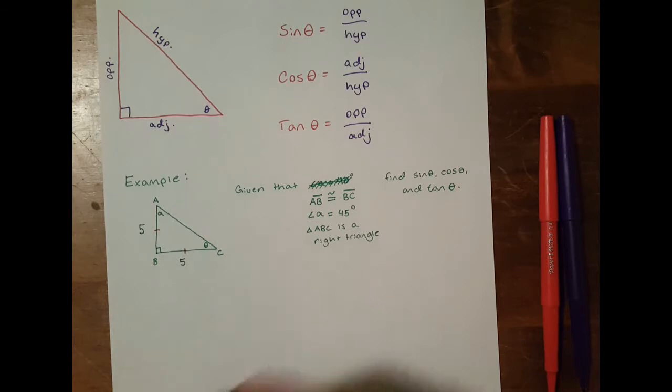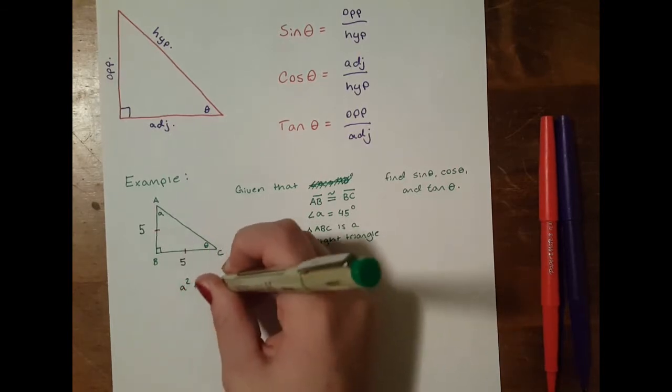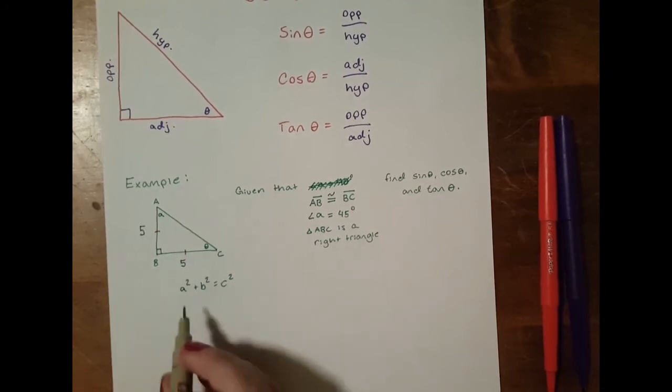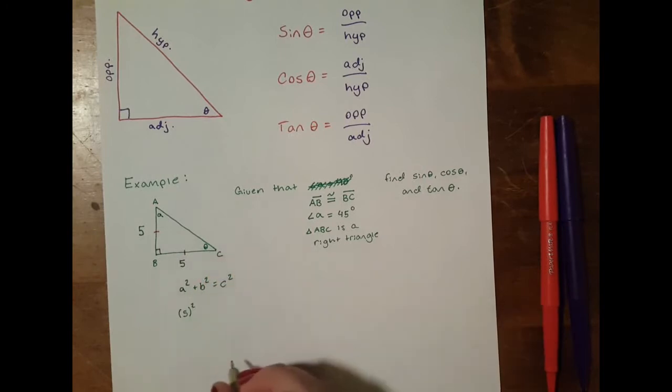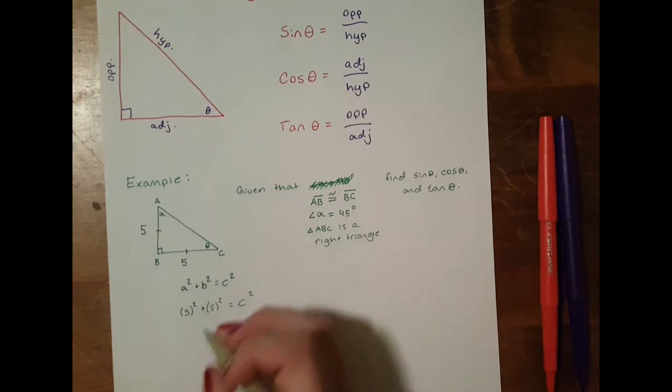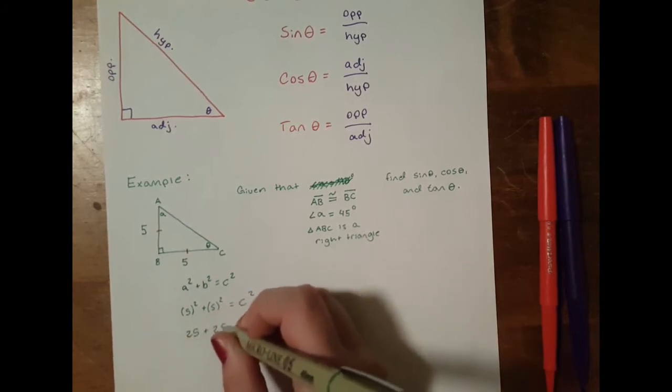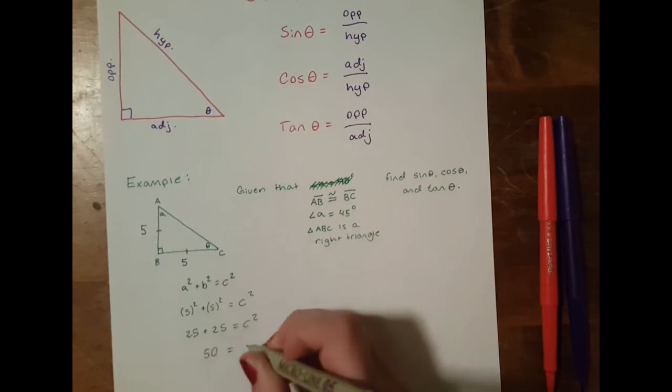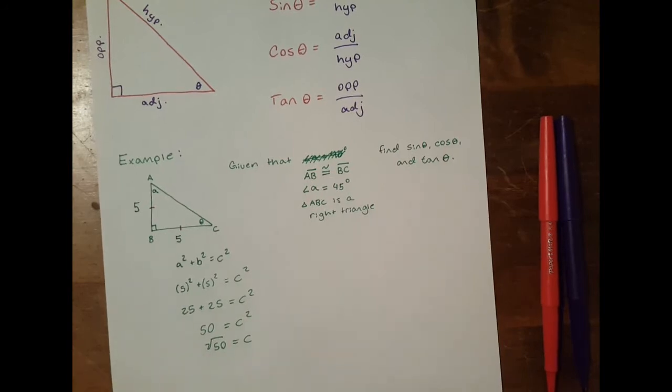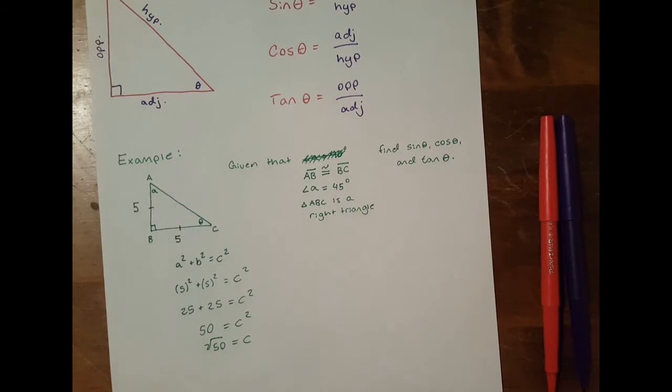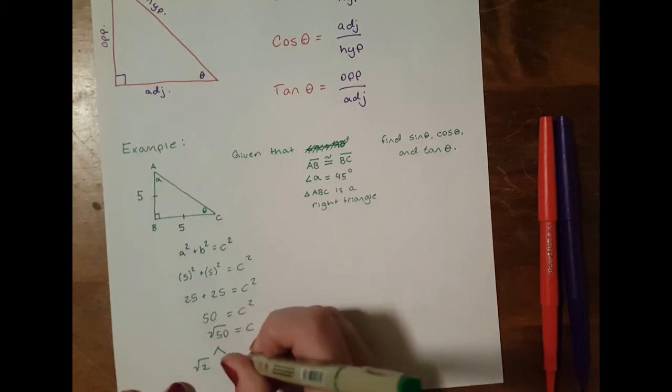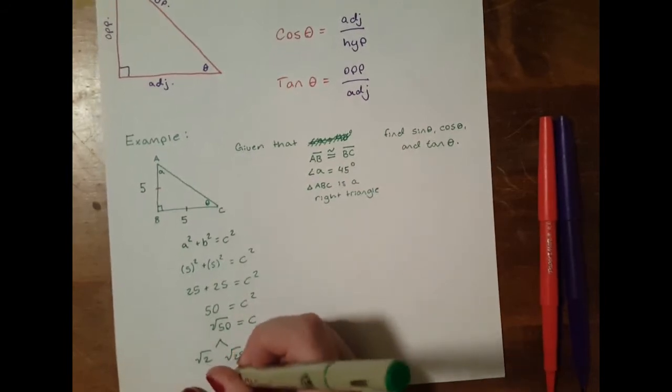And we know by Pythagorean's theorem, which is a squared plus b squared equals c squared, that we can solve for this hypotenuse being c squared. So if we do five squared plus five squared equals c squared, well then we can easily solve for that. That equals 25 plus 25 equals c squared, which means 50 equals c squared, which means the square root of 50 equals c. And you can simplify that. So you can pull out a 25 and a 2. This is root 2 times root 25, and we know that the root of 25 is 5, so this is just equal to 5 root 2.